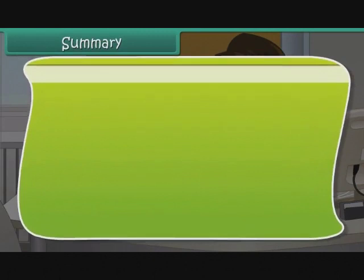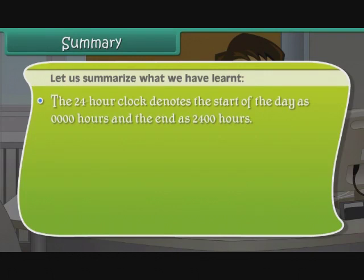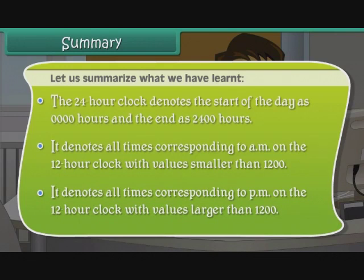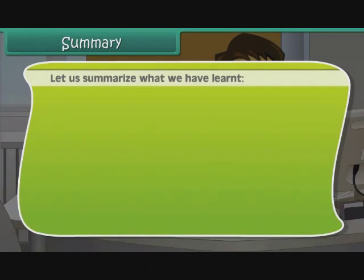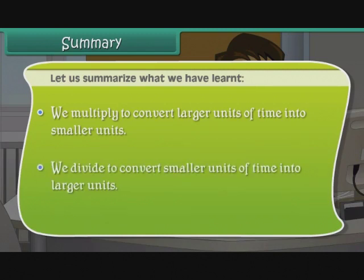Summary: The 24-hour clock denotes the start of the day as 0000 hours and the end as 2400 hours. It denotes all times corresponding to a.m. on the 12-hour clock with values smaller than 1200, and all p.m. times with values larger than 1200. We multiply to convert larger units of time into smaller units, and divide to convert smaller units into larger units.